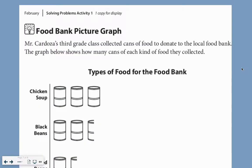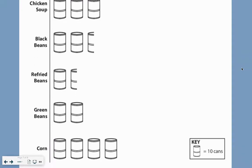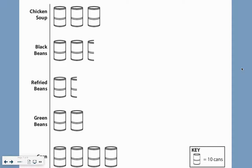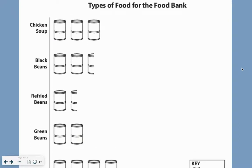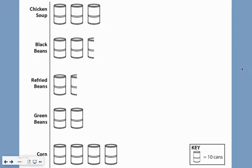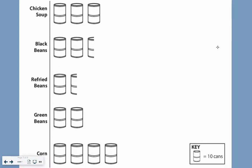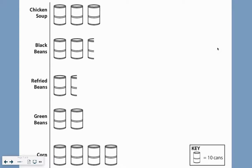Here's one more graph. This one's also different. What's different right off the bat? What do you notice immediately is different about this one? This one isn't using bars — it's using pictures. A picture of one can is equal to 10 cans. So the other two had 30 cans of chicken soup, and here's 10, 20, 30 cans of chicken soup. These are all showing us the same data. They just look a little bit different.